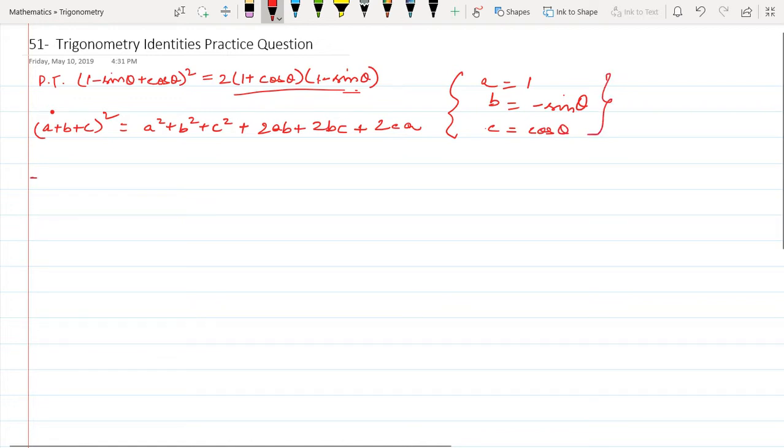Just put the values correctly, what you will get here is 1 plus sin square theta plus cos square theta plus, sorry, minus 2 sin theta minus 2 sin theta cos theta plus 2 cos theta.